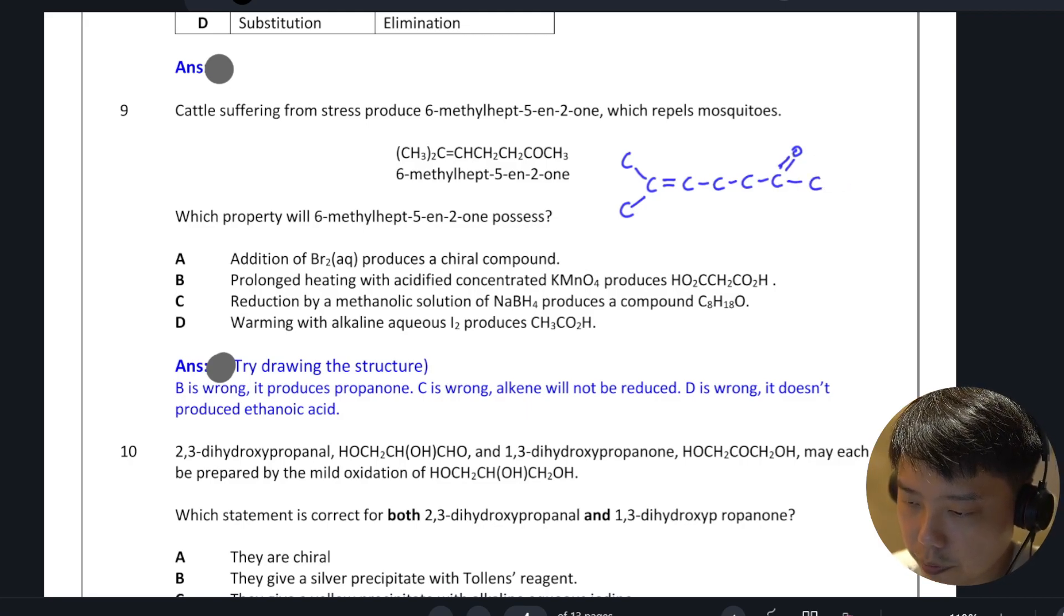Okay, so if you were to add in bromine aqueous, right, you will add a bromine here, OH here. Okay, then there will be a chiral carbon here, which means that A is actually our answer.